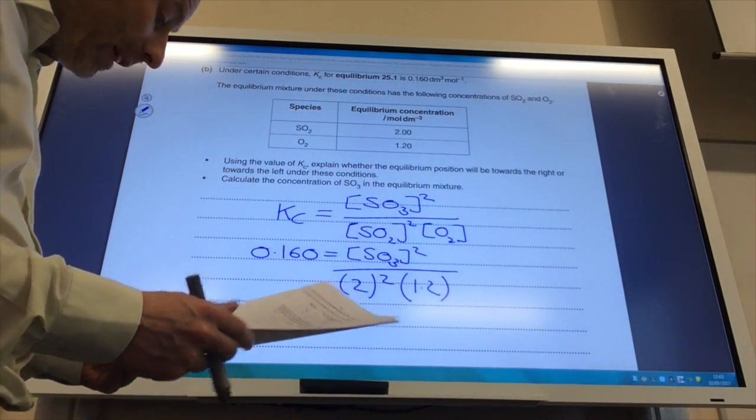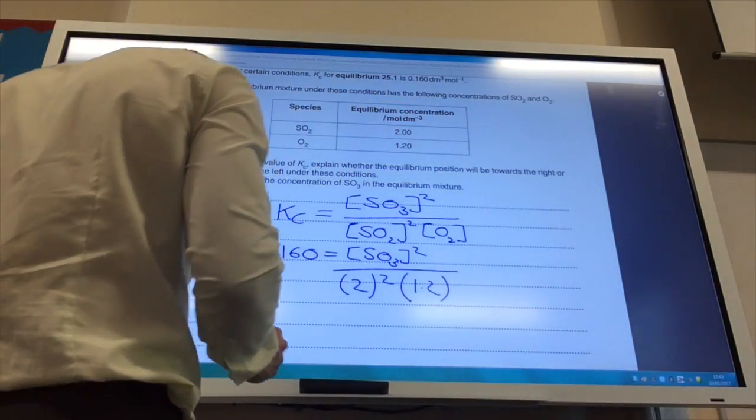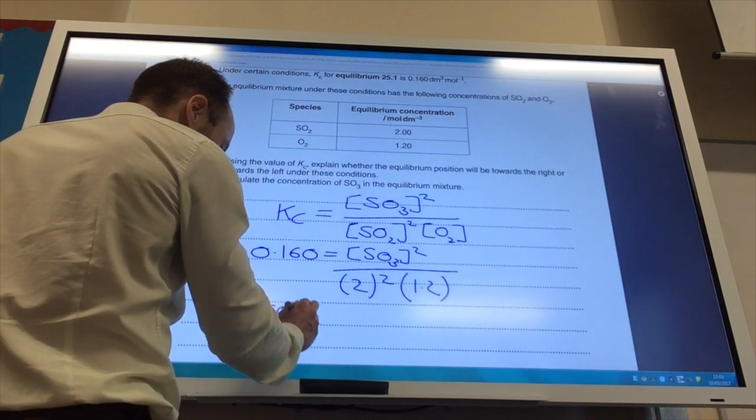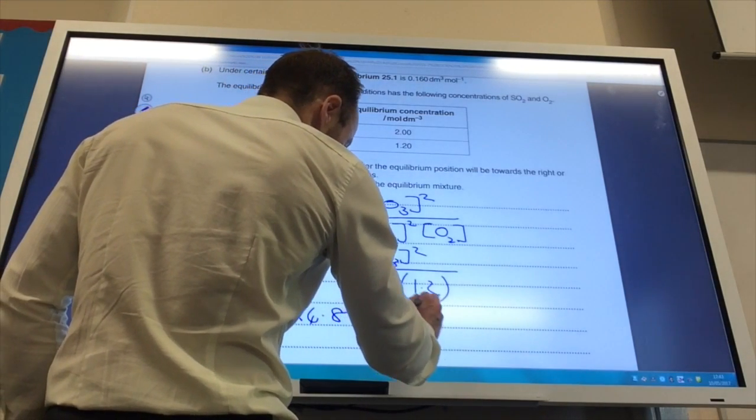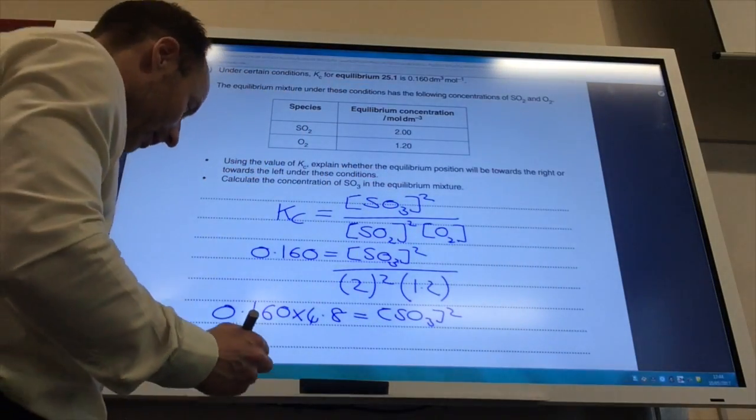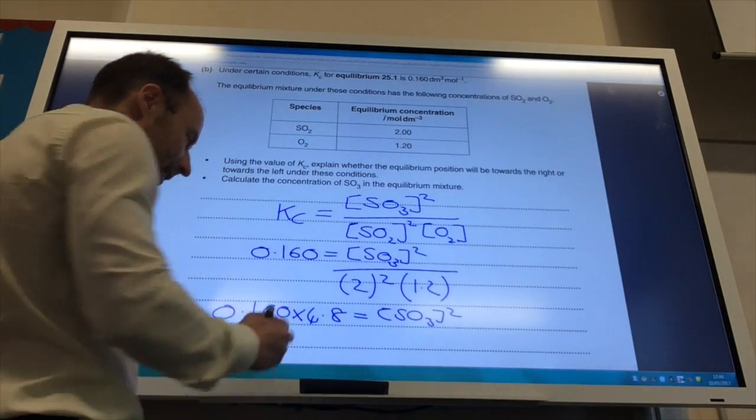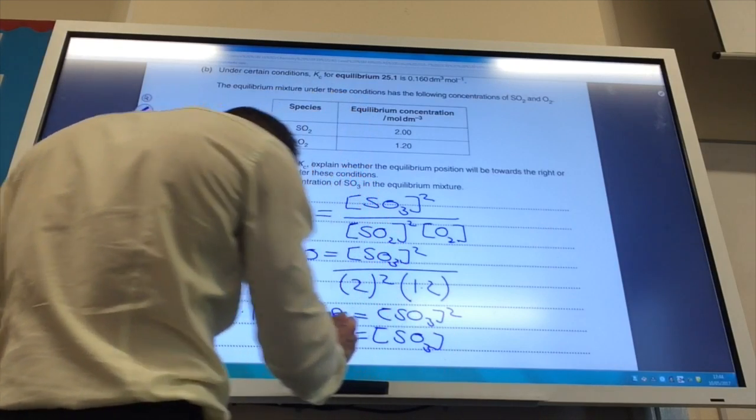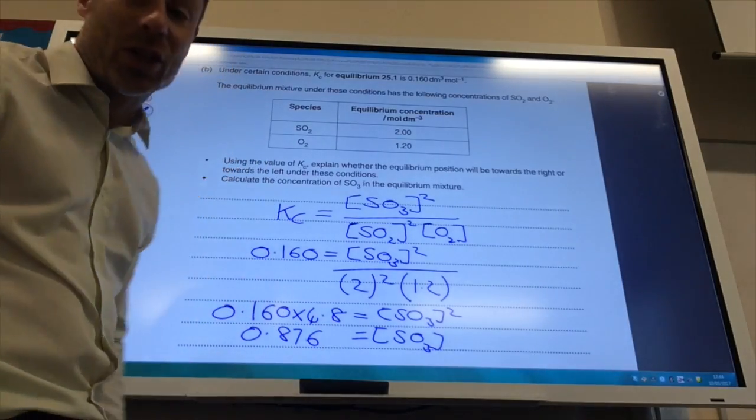So this here will come to 4.8. And you rearrange it to give you 0.160 times 4.8 is equal to the concentration of SO3 squared. So, this comes to 0.768, and therefore the concentration of SO3 is equal to 0.876 moles per decimetre cubed.